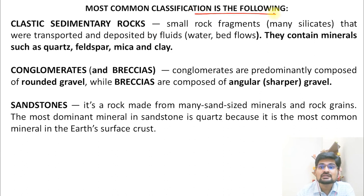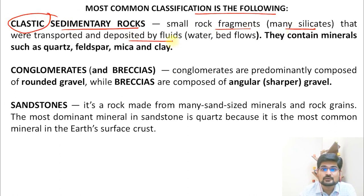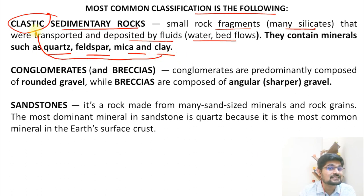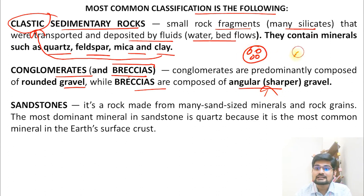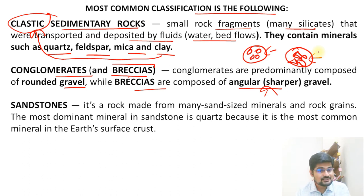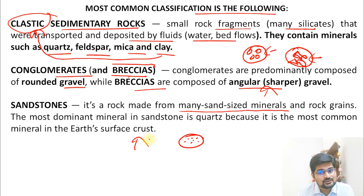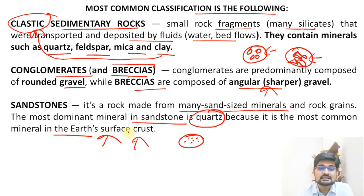The most common classification of sedimentary rocks includes clastic sedimentary rocks — small rock fragments mainly silicates transported and deposited by water, forming quartz, feldspar, mica, and clay. Conglomerates are predominantly composed of round gravel, while breccias are composed of angular or sharper gravel. Sandstones are made from sand-sized minerals, with quartz being the most dominant mineral — one of the most common minerals on earth's surface crust.